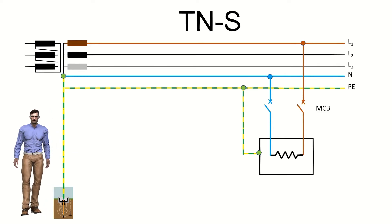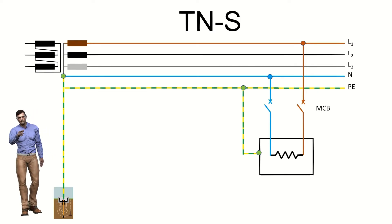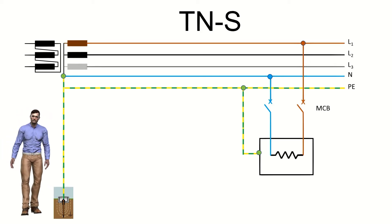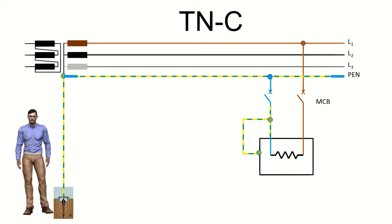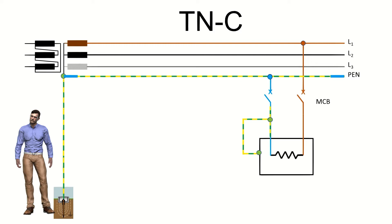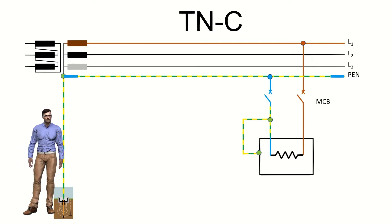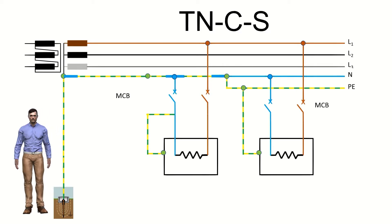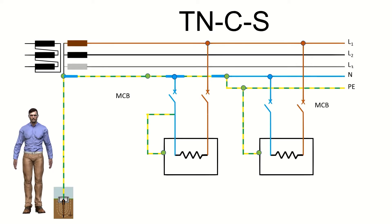In the TNS diagram, we see the neutral of the supply grounded, and from that point two conductors come out that reach the receiving installation: one that acts as a neutral, called N, and the other that acts as a protective conductor, called PE. In the TNC diagram, the neutral is also grounded, but from this point only one conductor is delivered that reaches the receiving installation and acts as both a neutral and a protective conductor, denominated by the letters PEN. In the TNCS scheme, a single PEN conductor will arrive in some part of the installation, and in others it will be divided into two conductors: one for neutral and the other for protection.